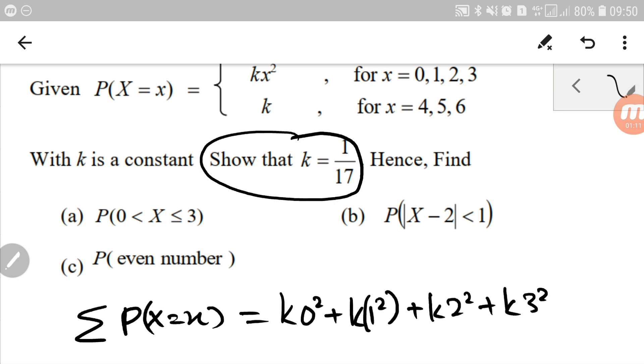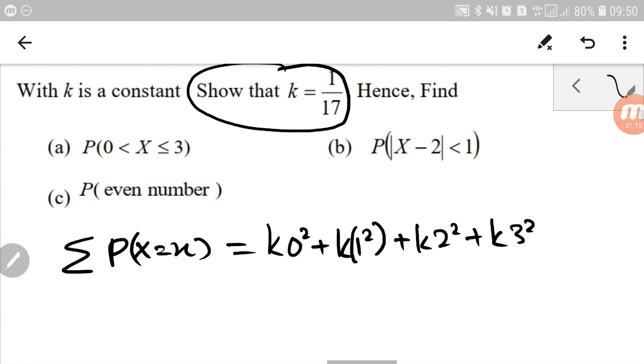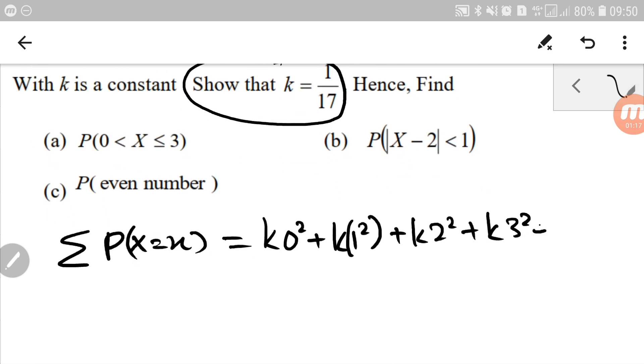Let's move on to 4, 5, 6. It will be k if the x is 4, 5 and 6. So just put a k for 4, put another k for 5 and the last k for 6.